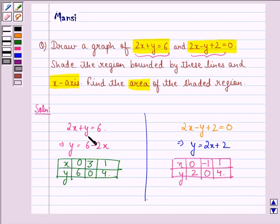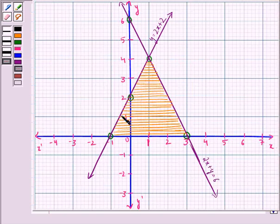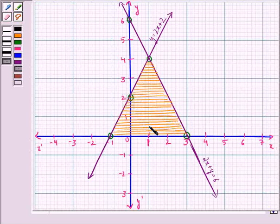So now, we plot these two lines on the graph by plotting the points first. Like this, we have these two lines and this shaded region is the required region.